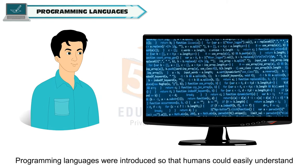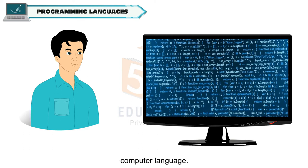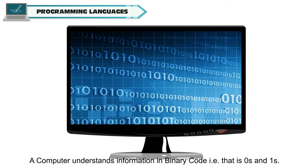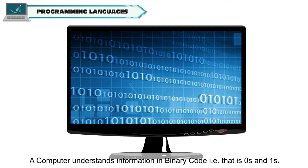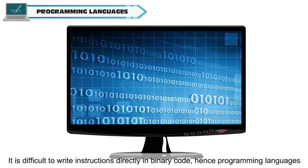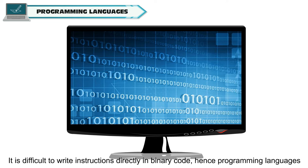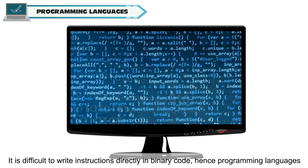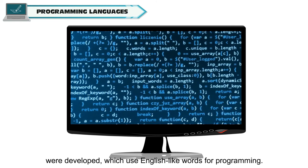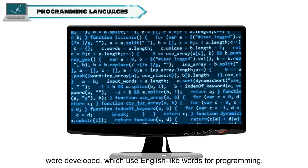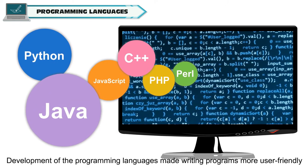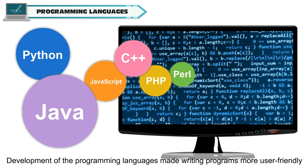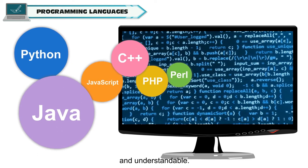Programming languages were introduced so that humans could easily understand computer language. A computer understands information in binary code, i.e., zeros and ones. It is difficult to write instructions directly in binary code. Hence, programming languages were developed, which use English-like words for programming.